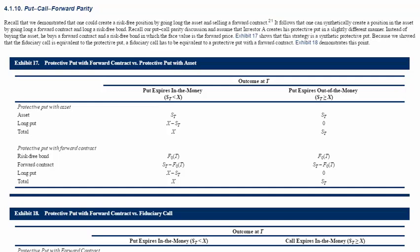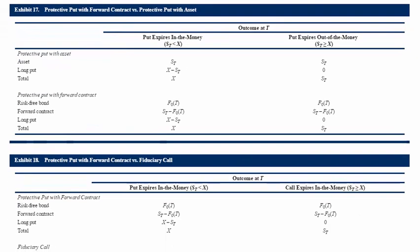Exhibit 17 shows this strategy is a synthetic protective put. Because we show that the fiduciary call is equivalent to the protective put, a fiduciary call has to be equivalent to a protective put with a forward contract, as Exhibit 18 will demonstrate. So you can see Exhibit 17 — protective put with an asset — you've got the asset, the long put, and your total. Protective put with a forward contract: you've got the risk-free bond, the forward contract, and the long put.